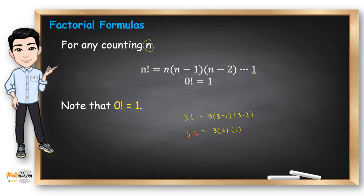So 3 factorial is just 3 times 2 times 1, which equals 6. And of course, the example I just showed you is 0 factorial, which equals 1.